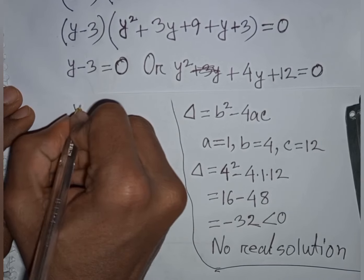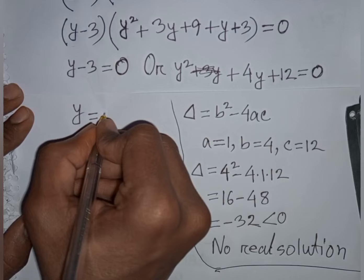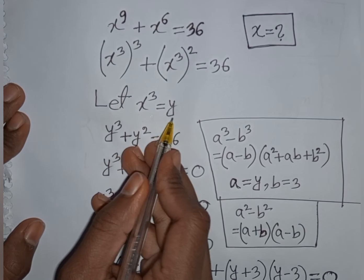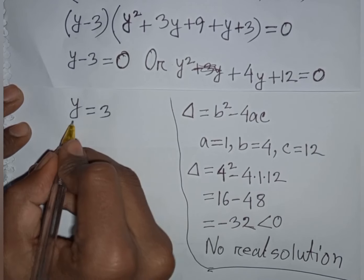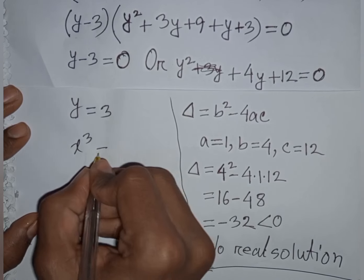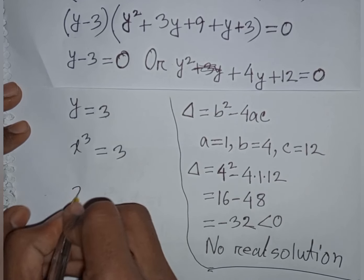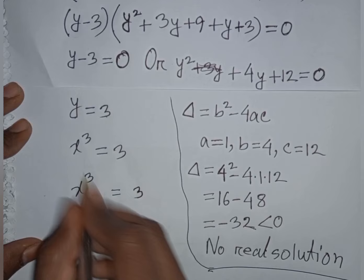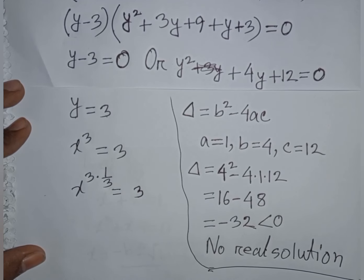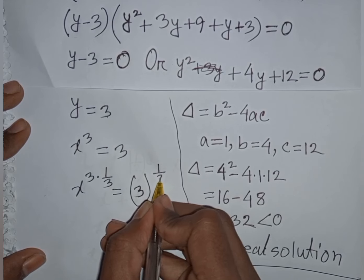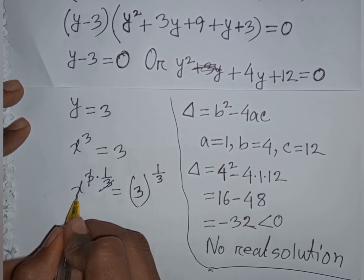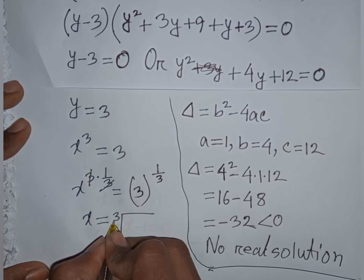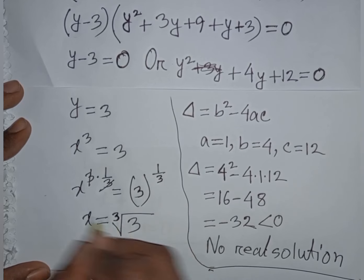From (y − 3) = 0, we get y = 3. Since y = x^3, we have x^3 = 3. Raising both sides to the power 1/3, x = 3^(1/3), which is the cube root of 3.